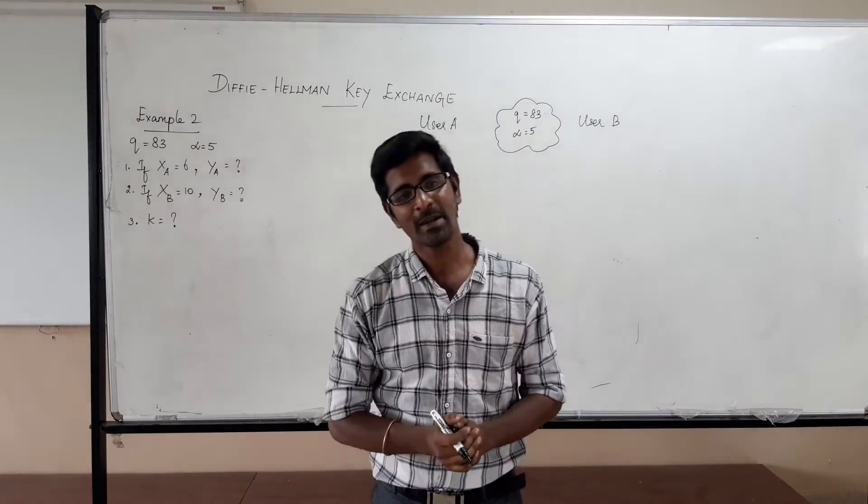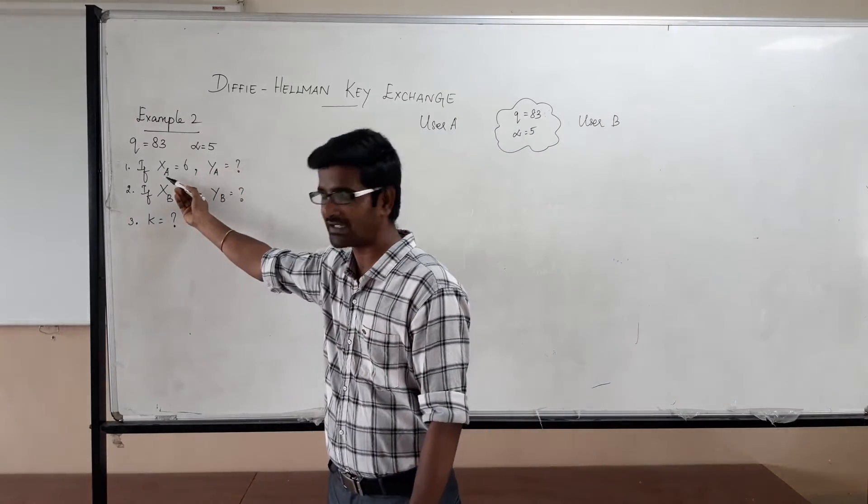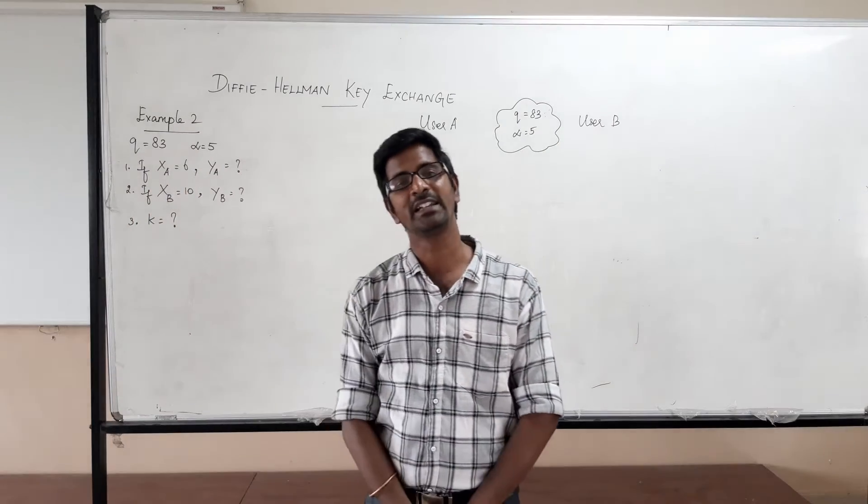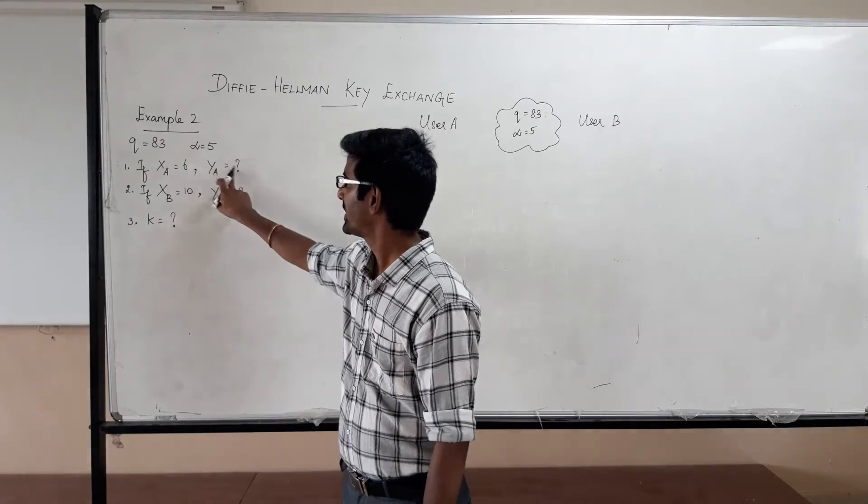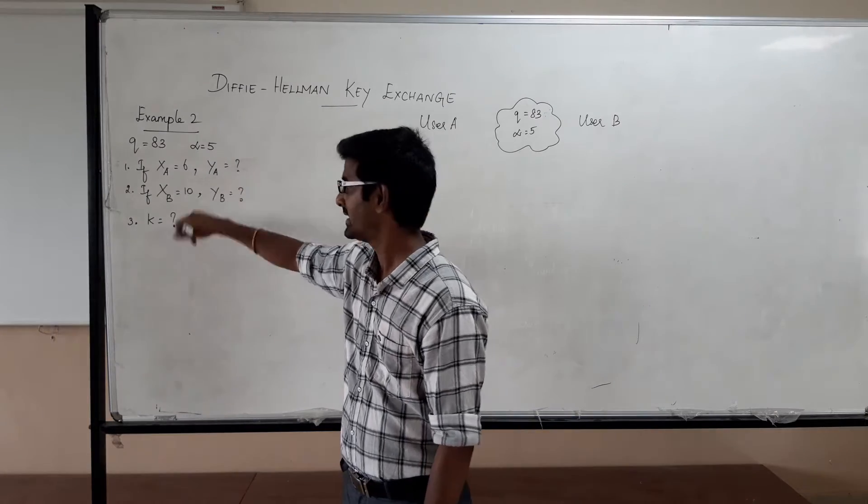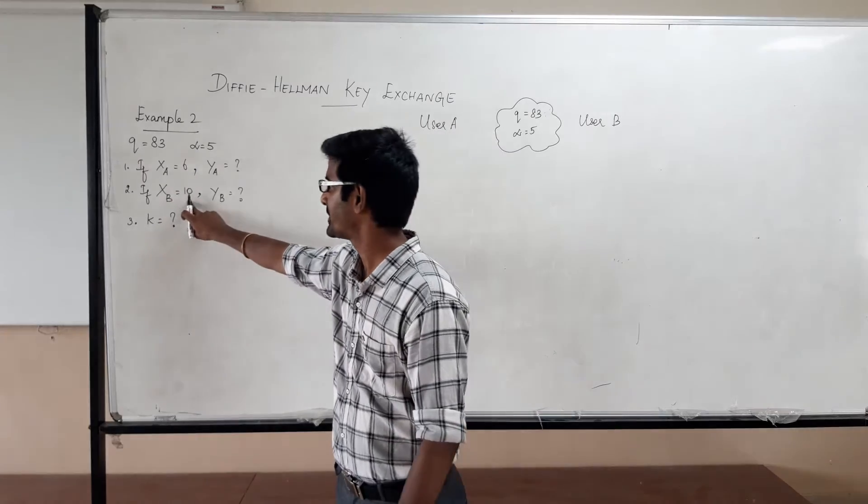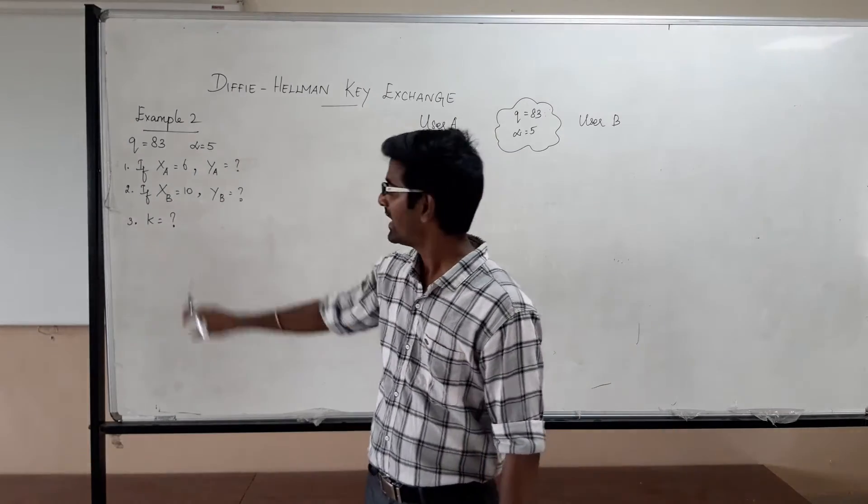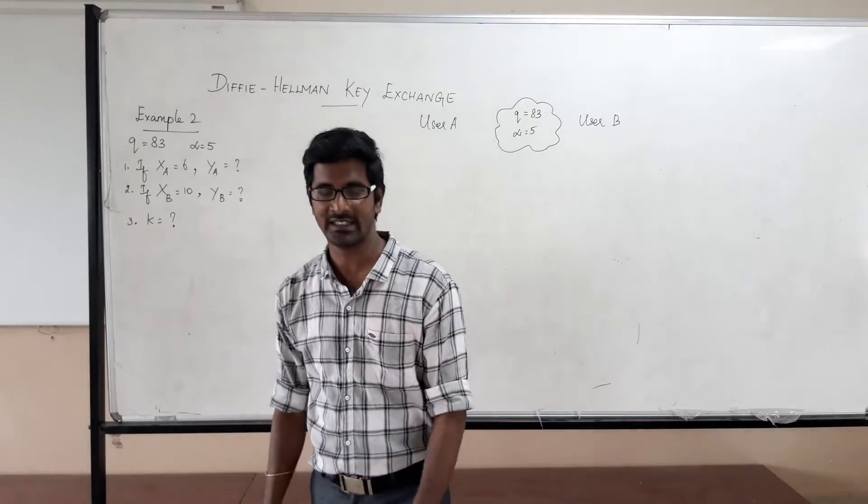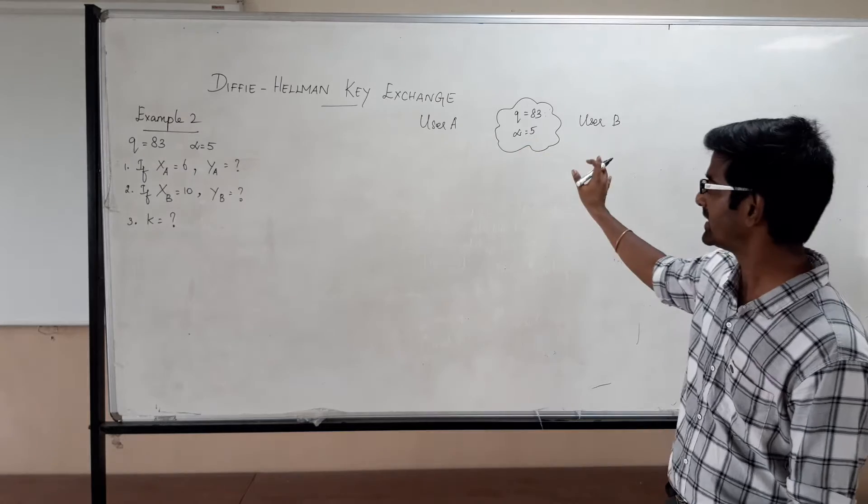Now just see, the question goes like this. If the prime number is 83 and the primitive root is 5, and if user A is having his private key as 6, what is user A's public key? If user B is having the private key as 10, what is user B's public key? And what is the shared secret? That is KA or KB, or KA equal to KB. And we will solve this.